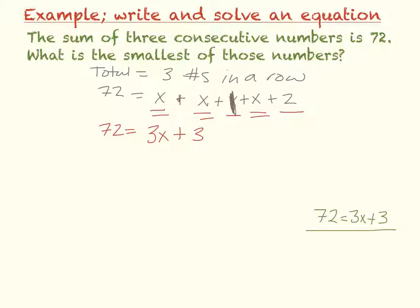So I solve the same way, the opposite of plus three, minus three, minus three. So seventy-two minus three is sixty-nine equals three times X. The opposite of times three times, we have to divide by three to get the X by itself, the opposite of multiply. So I divide by three. Sixty-nine divided by three is actually going to give me twenty-three, and that is X.